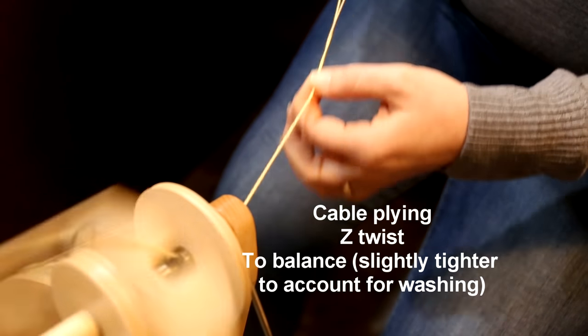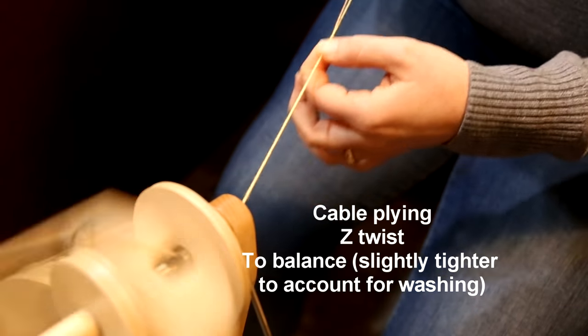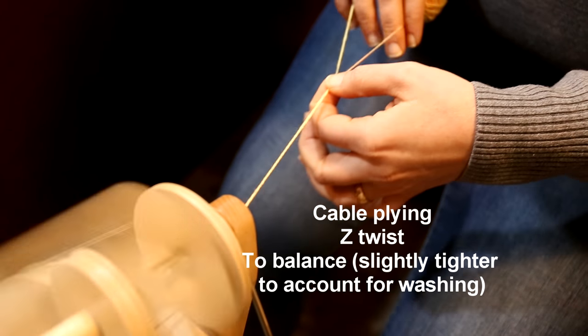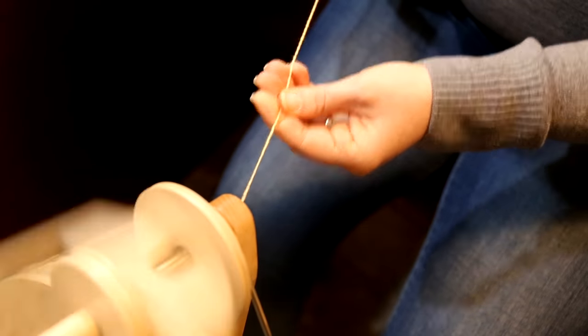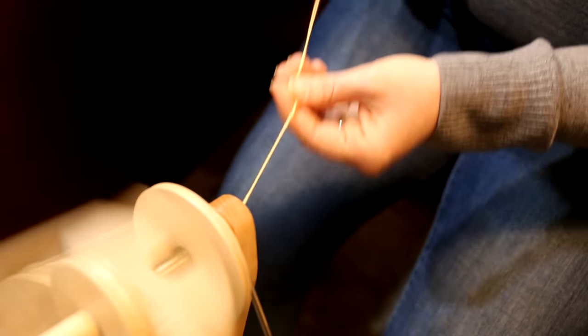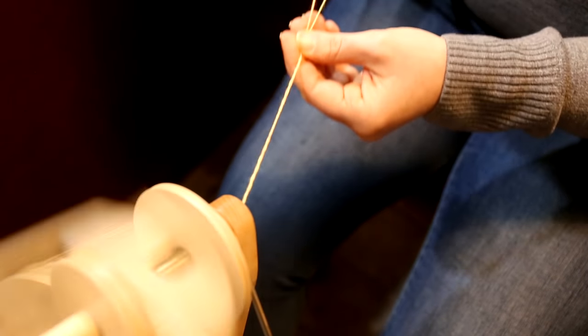On socks, like the heels and toes, on a sweater, the cuffs - so making cabled yarn takes a lot longer because you're spinning for four plies, but you don't necessarily have to spin for an entire project for cabled yarns.